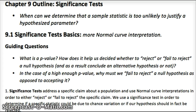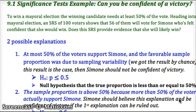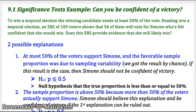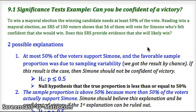Here's a problem we'd look at with a significance test — a mayoral election. The mayor needs at least 50% of the vote, and they want to get an idea if they're confident they're going to win. They found an SRS, and 56 out of the 100 people in the SRS said they'll vote for Simone. So she felt confident she's going to win. There are two possible explanations for this sample statistic. The first is that 50% at most support Simone, and the favorable sample proportion was due to sampling variability — just by chance. She actually doesn't have half or more of the voters supporting her, but by chance got an SRS of 100 that was 56%. So there's our null hypothesis.